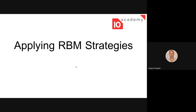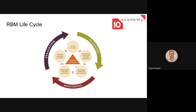Once we understand that, we can apply the strategies for our project management. The RBM lifecycle basically contains three interconnected, cyclic steps. The first step is planning, then monitoring, and then evaluation. Setting the vision — that's the objective — and defining the result map and the RBM framework. Today we will be discussing about the planning, the monitoring, and the evaluation. This is the basic lifecycle of RBM.